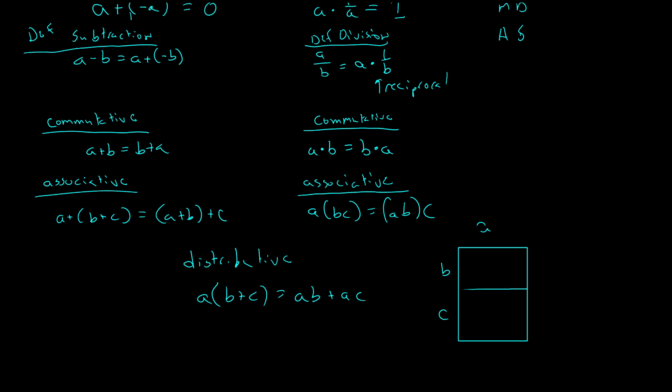is I can find an area of an object by multiplying the length times the width. Well, I can multiply A times B and find the area in here. And add them together to get the whole area. And that's this side of the distributive. Or I can add B and C together and multiply that by A to find all of the area. And that's this side of this relationship.